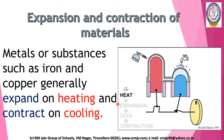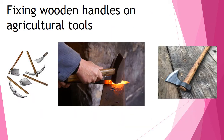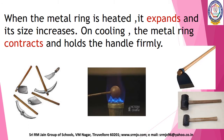This property is used in various processes. Let us see some examples of expansion and contraction of materials. First one: fixing wooden handles on agricultural tools. Agricultural tools such as hoes and mattocks have a metal ring into which the wooden handles are attached firmly. When the metal ring is heated, it expands and its size increases. This allows for inserting the handle into the ring. On cooling, the metal ring contracts and holds the handle firmly.